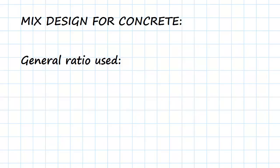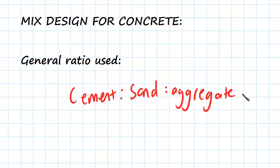First, let's talk about the general ratio used. The ratio that we use is that cement, sand, and aggregate are mixed in the ratio 1:2:3. So cement to sand to aggregate equals 1:2:3. For every one unit of cement, we have double the amount of sand and triple the amount of aggregate.